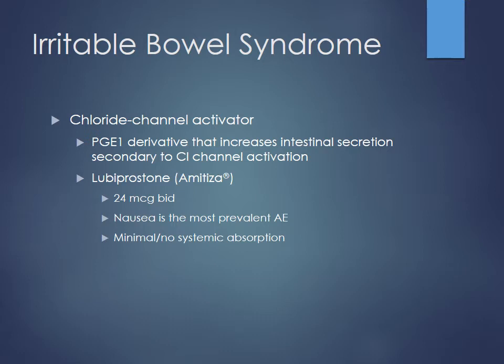A newer drug is lubiprostone (Amitiza), a prostaglandin derivative and chloride channel activator. It increases intestinal secretion of fluids by opening chloride channels in the GI epithelium, increasing the urge to defecate. It may be used for IBS with constipation. The drug works directly at the GI epithelium with minimal systemic absorption, so systemic side effects are limited — mainly some minor nausea.